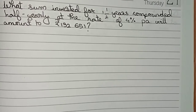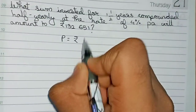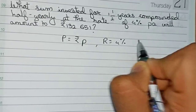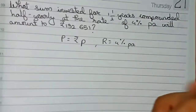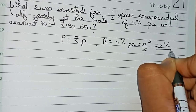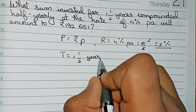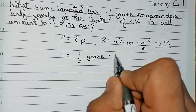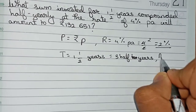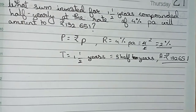To solve this, let's first list all the given information. Principal is not given, so we write principal P. Rate of interest is four percent per annum; since it is compounded half-yearly, we divide by two, giving two percent. Time is one and a half years, which converts to three half-years. Amount given is rupees 1,33,651.